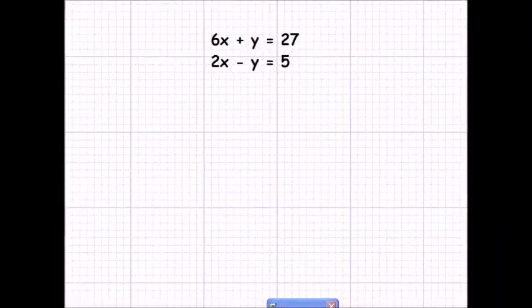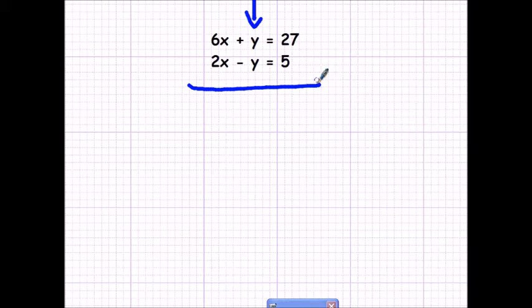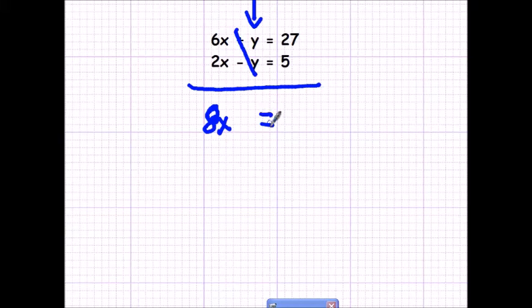Here's our first example. We have our two equations and you'll notice something nice about these two equations. The y terms are opposites of each other. I can add both sides of each equation to each other and watch what happens. 6x plus 2x equals 8x. A positive 1y and a negative 1y adds up to zero and just goes away. Here's my equal sign and 27 plus 5 equals 32.